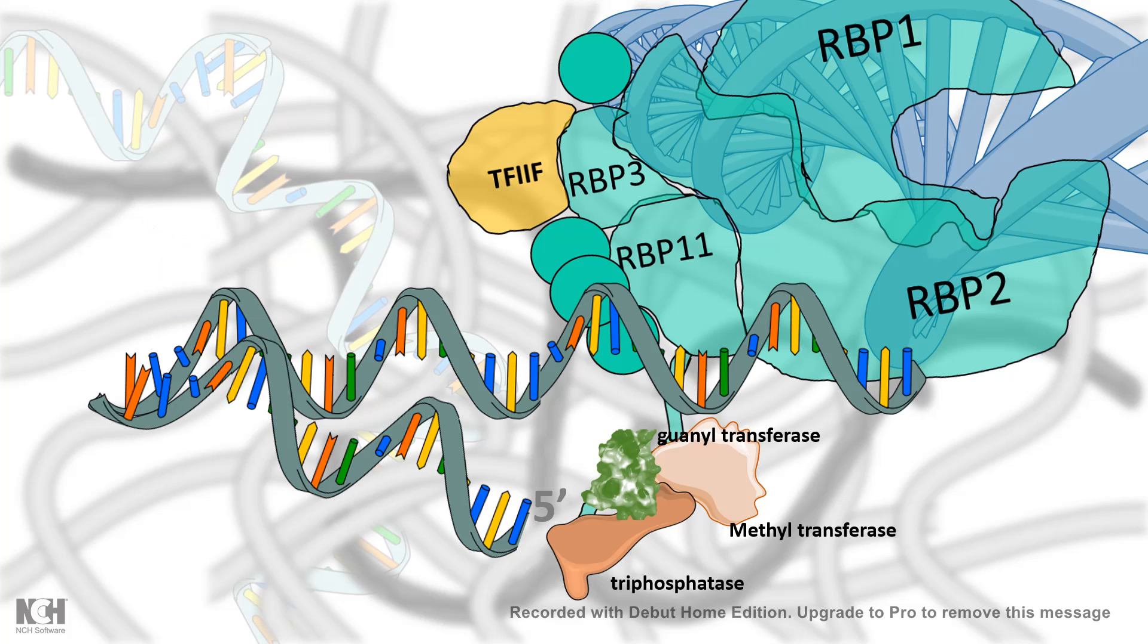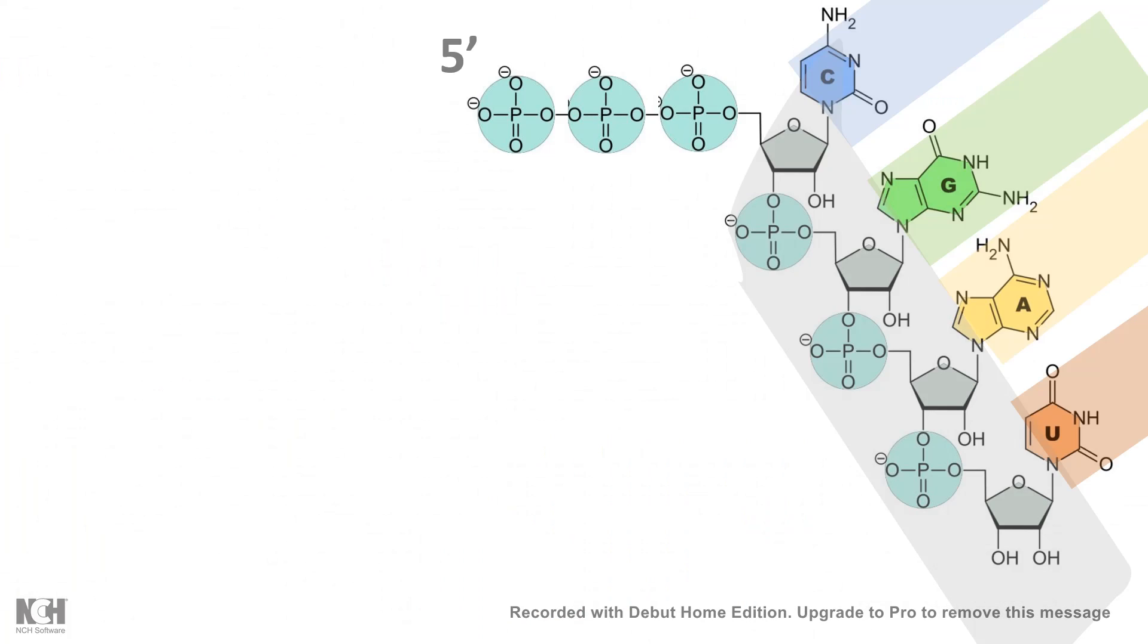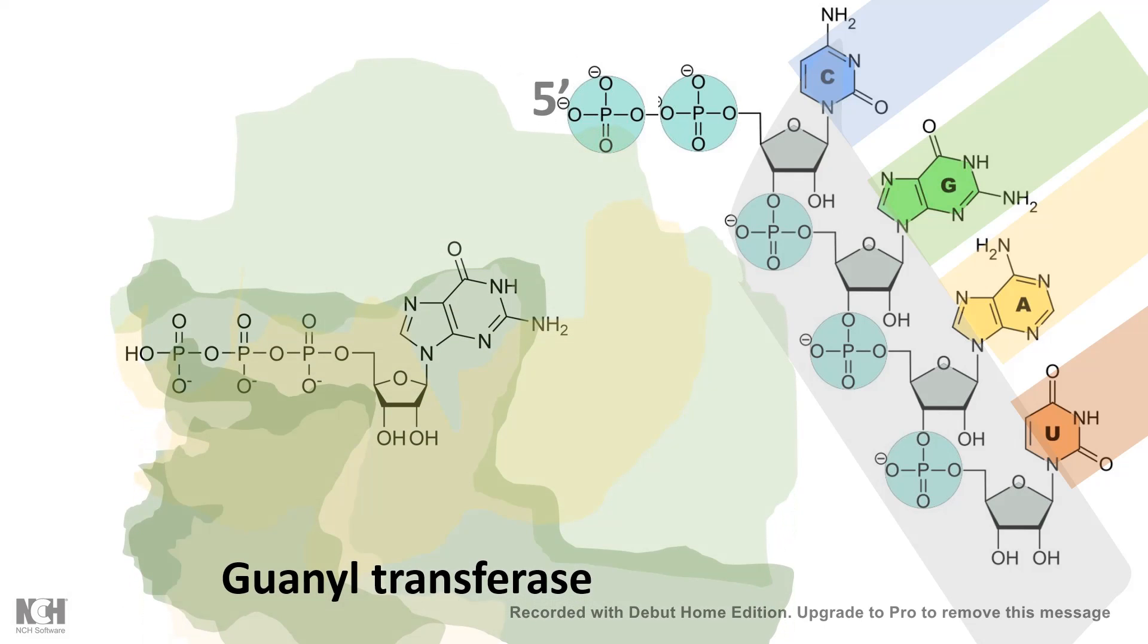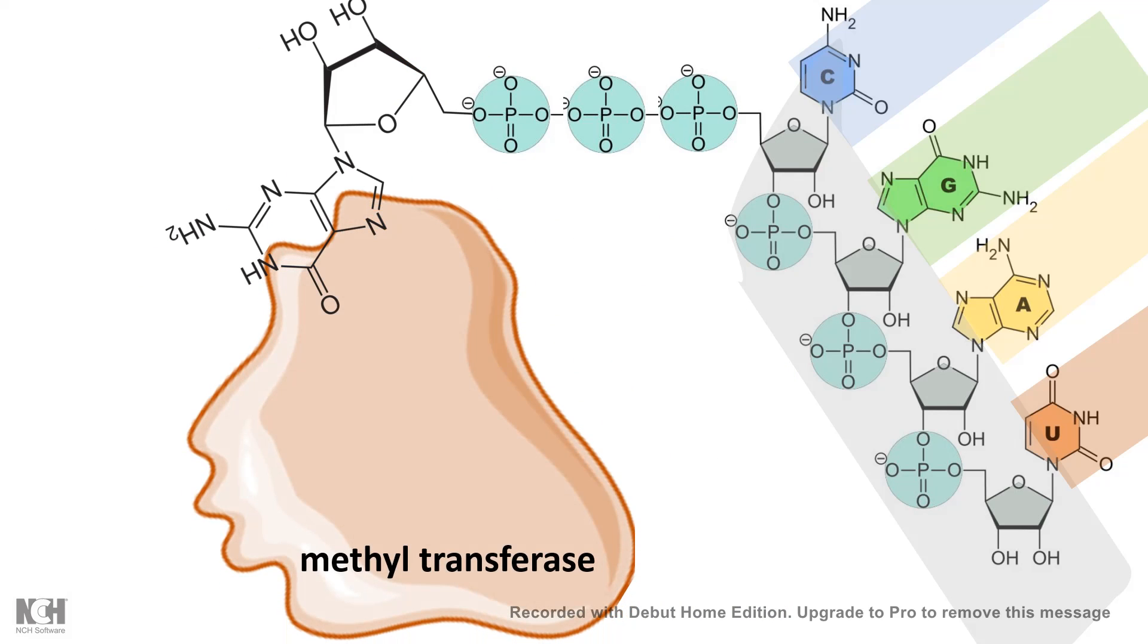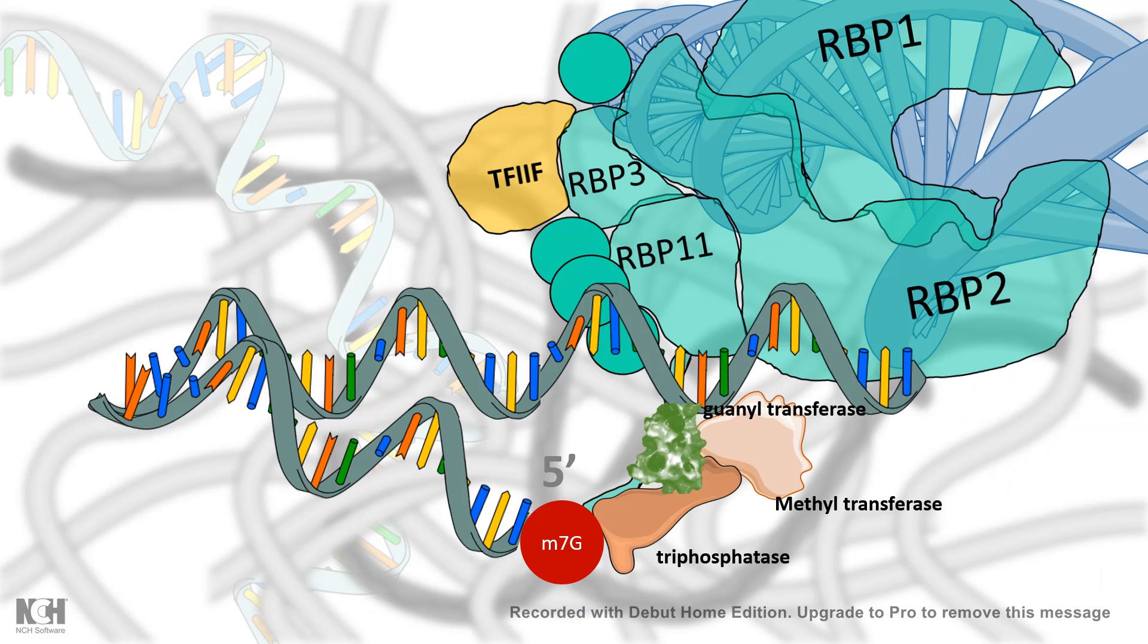The first step is to take the 5' end of the growing mRNA proximal to the region where the capping complex is sitting, and that happens by a DNA curling-in mechanism. Then, the first enzyme to act upon the 5' end of the growing RNA is the triphosphatase, which chops off one phosphate group. Then, guaniltransferase acts on the end and transfers the guanine to the 5' end of the RNA. The last enzyme, the methyltransferase, transfers a methyl group at the 7th position of the guanine. This is the process of formation of the M7G cap.